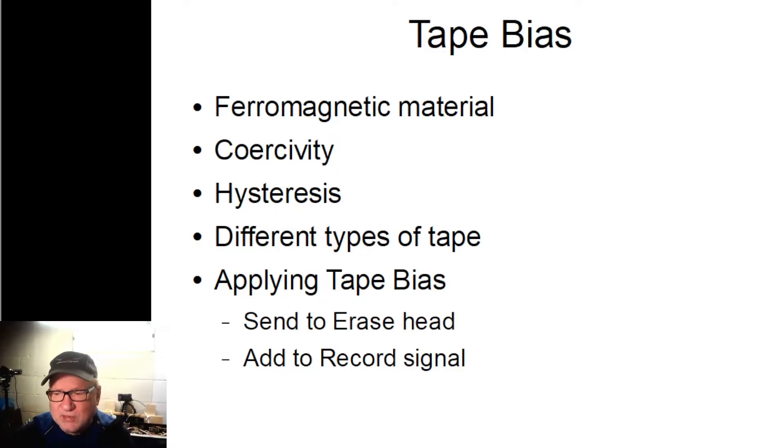So this comes to bias. It was found that to have the tape record evenly across the frequency range of 20 to 20 kilohertz, it needs to be in a linear portion of the curve. And let me show you what I mean by that.